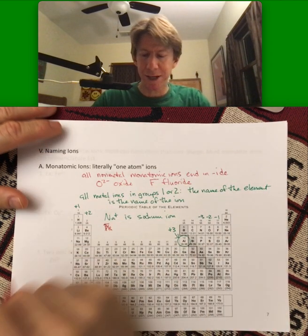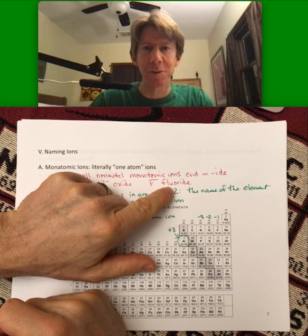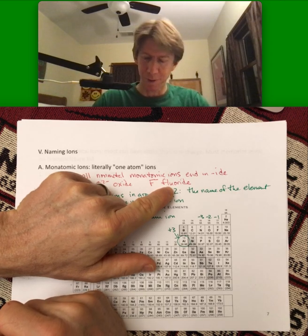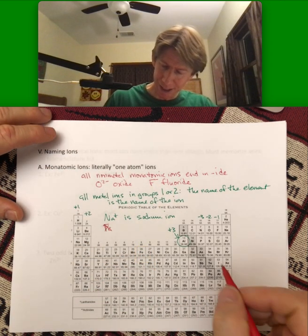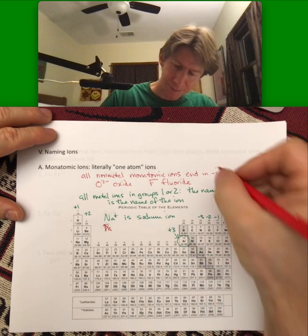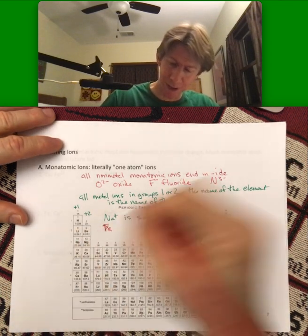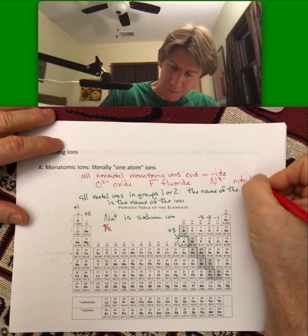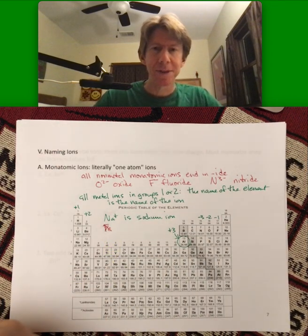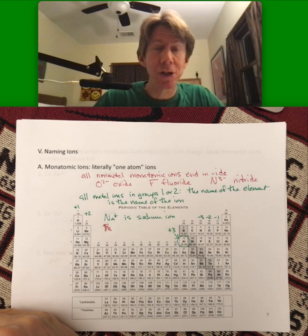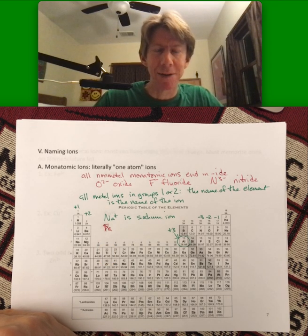Fluorine becomes fluoride. And it doesn't matter that much, but the U does come before the O if you're spelling fluoride. And nitrogen, which is nitride, N³⁻.